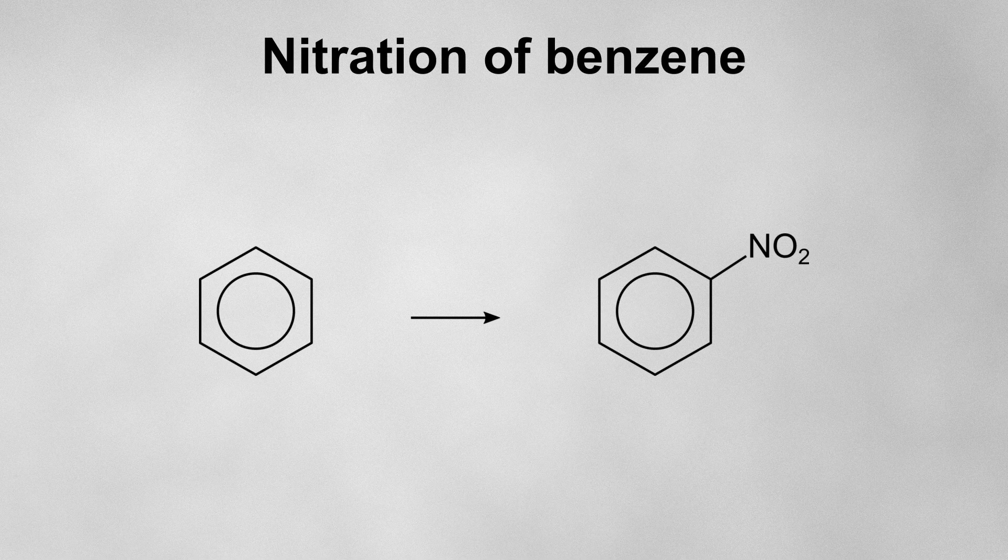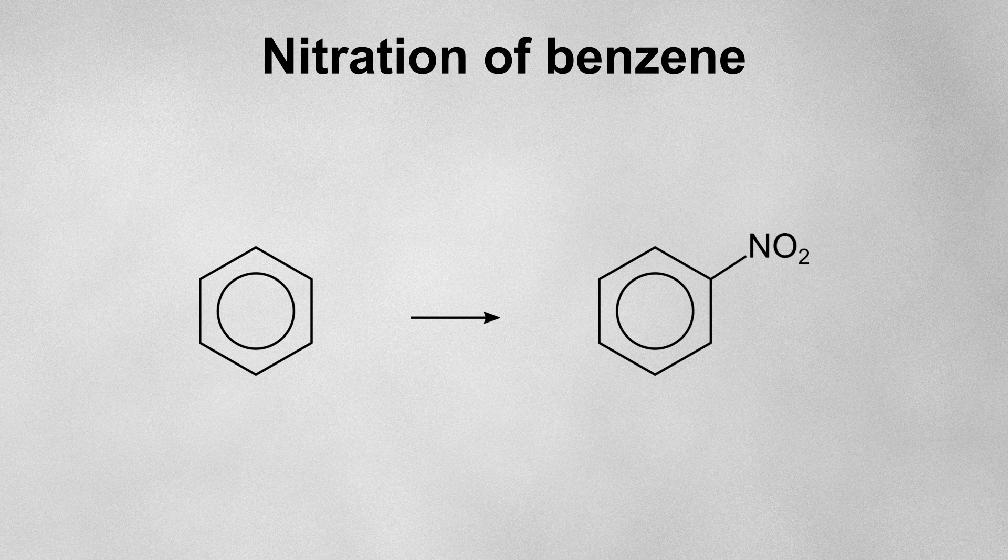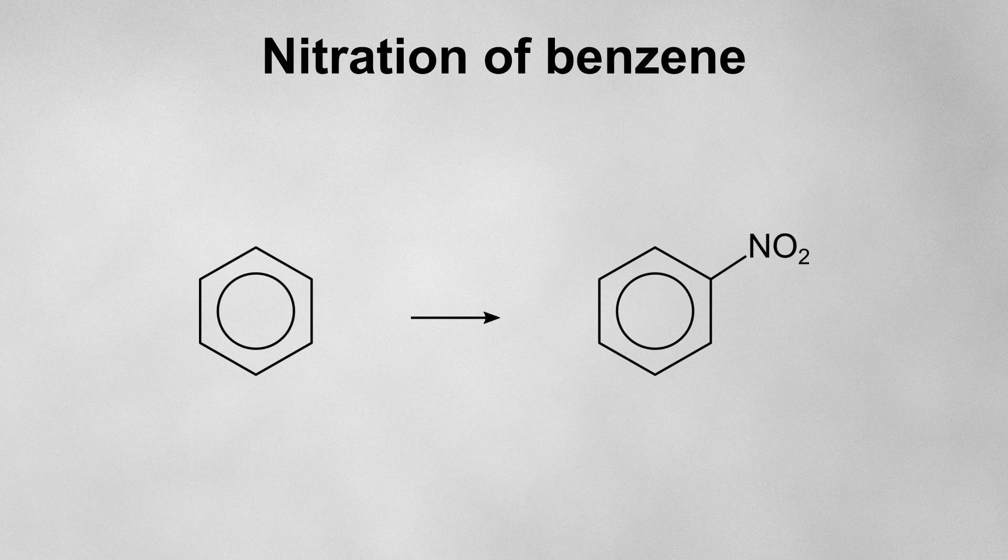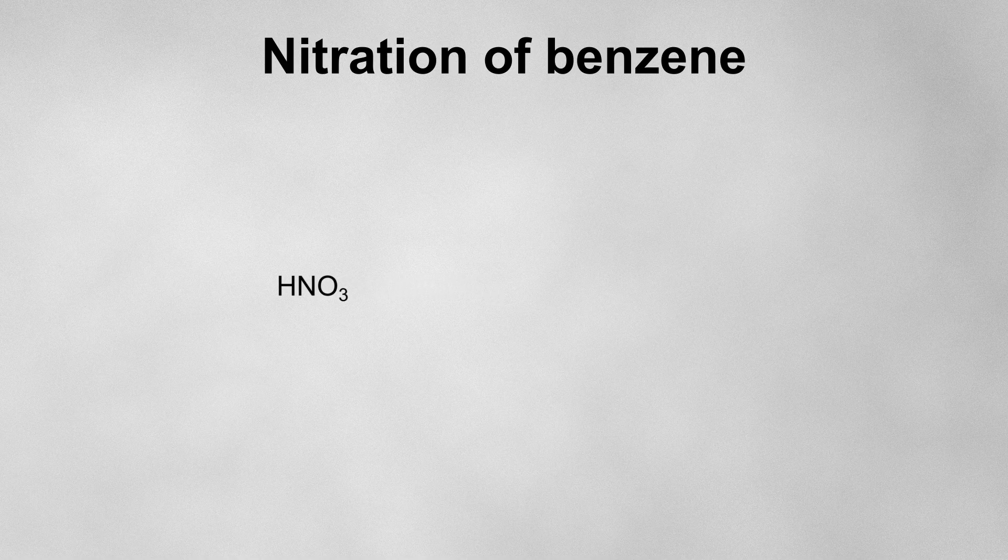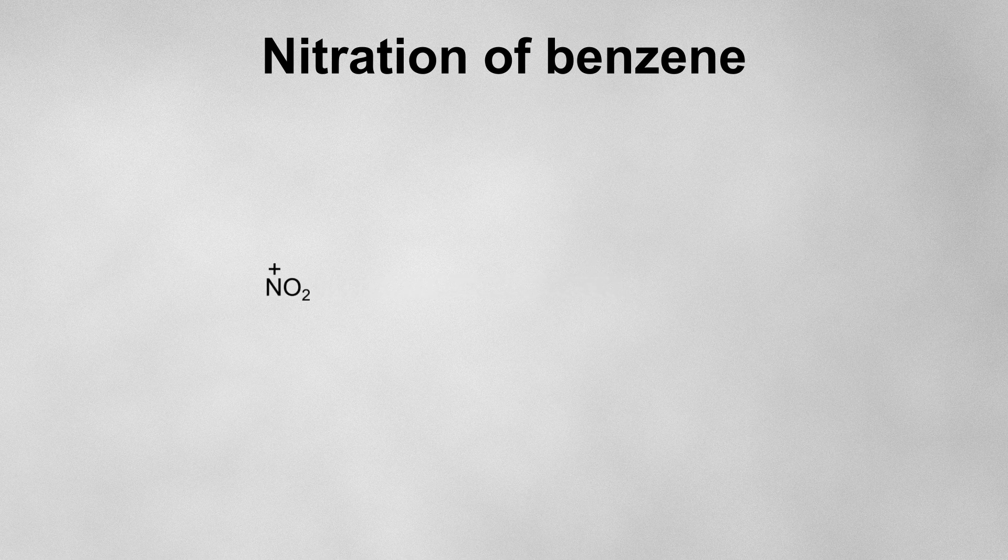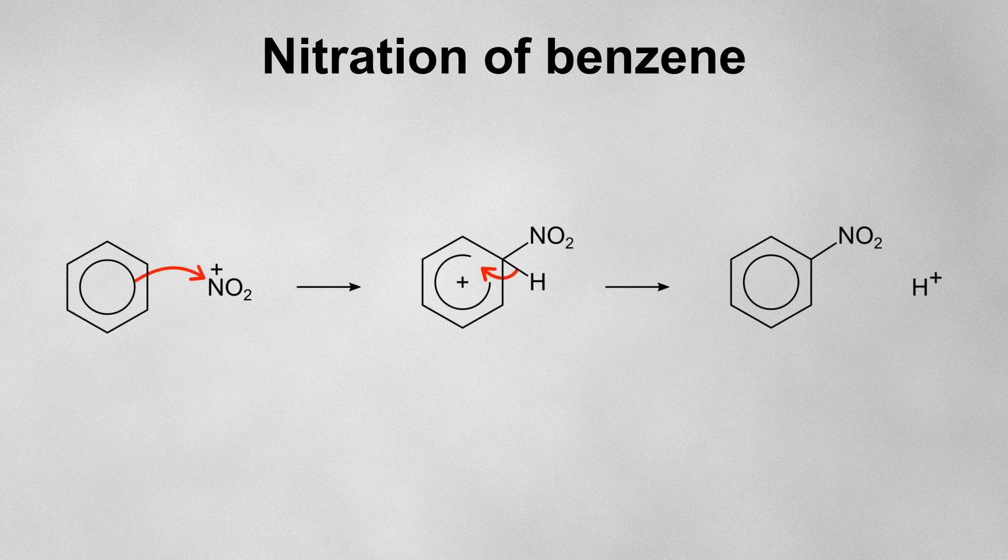The last example I want to show you is the nitration of benzene. This is slightly different because there's no halogen, so it doesn't involve a halogen carrier. However, the overall principle is exactly the same as what we've discussed with the previous three reactions. In this case, the reagent is nitric acid and the electrophile is generated by reacting it with sulfuric acid. Now, this will be electrophilic enough to initiate an electrophilic substitution.